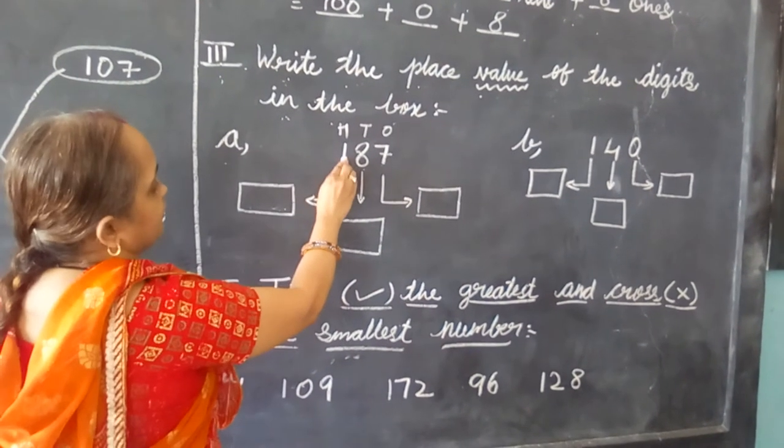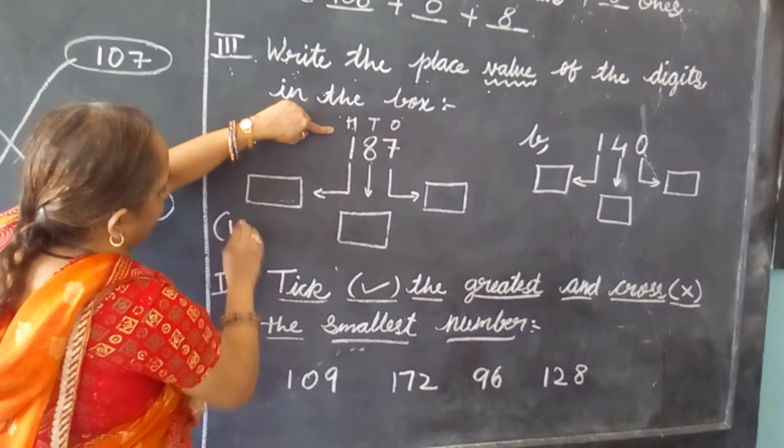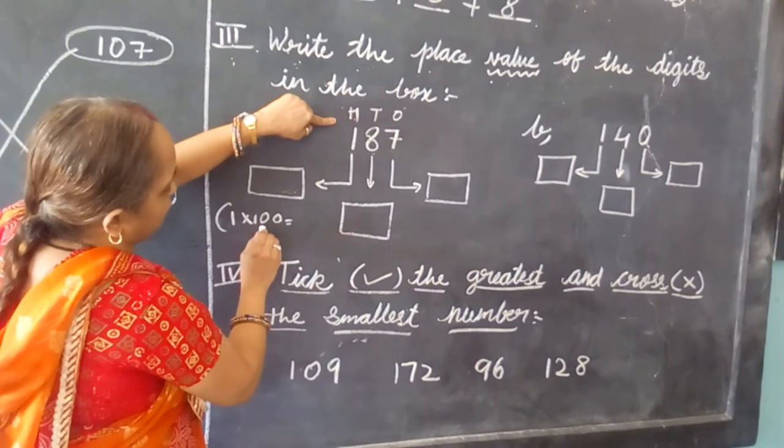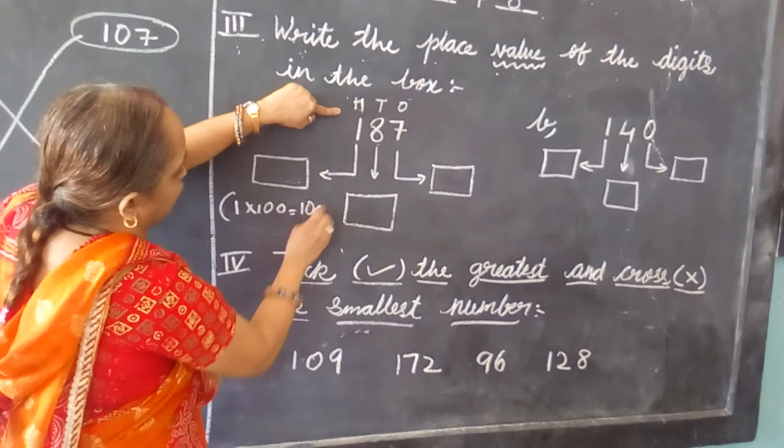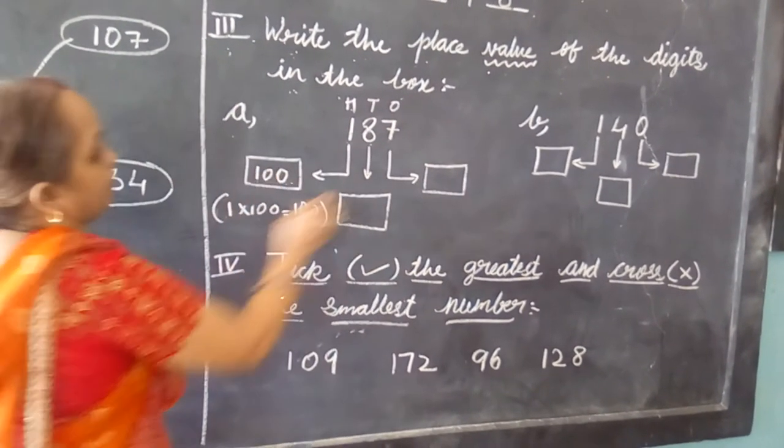Now see here, when 1 is multiplied by 100, 1 times 100 into 100 is 100 only. So we are going to write here 100.